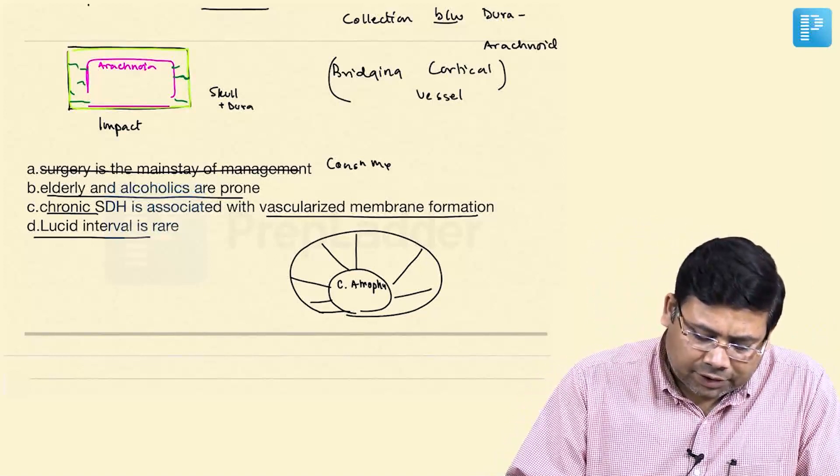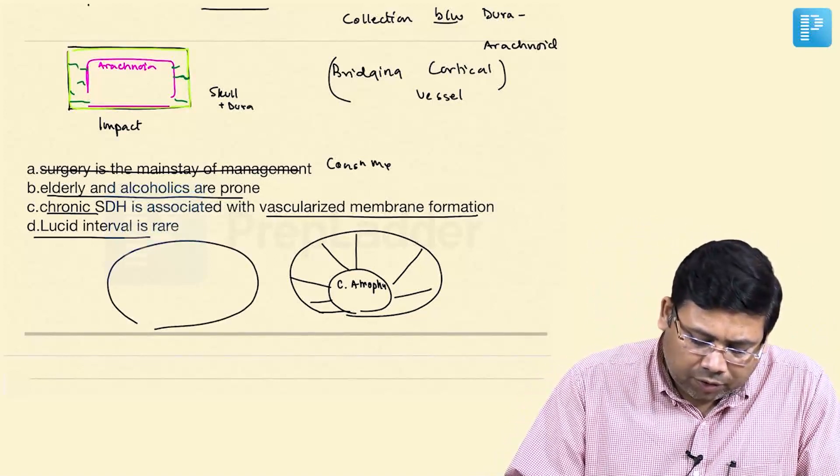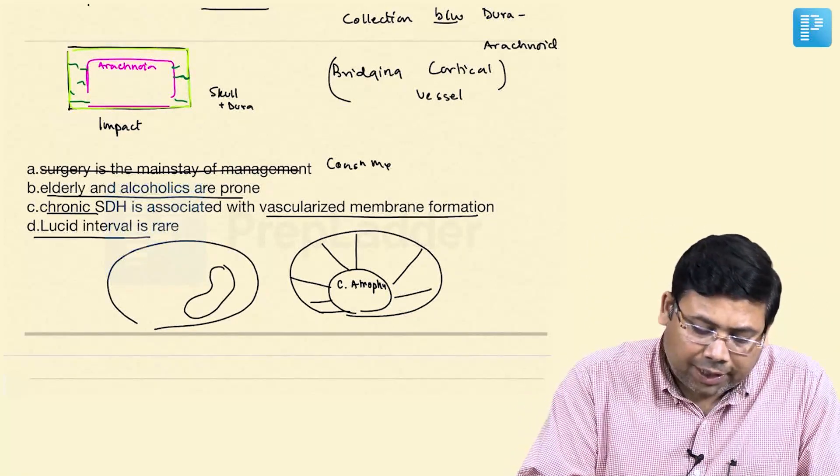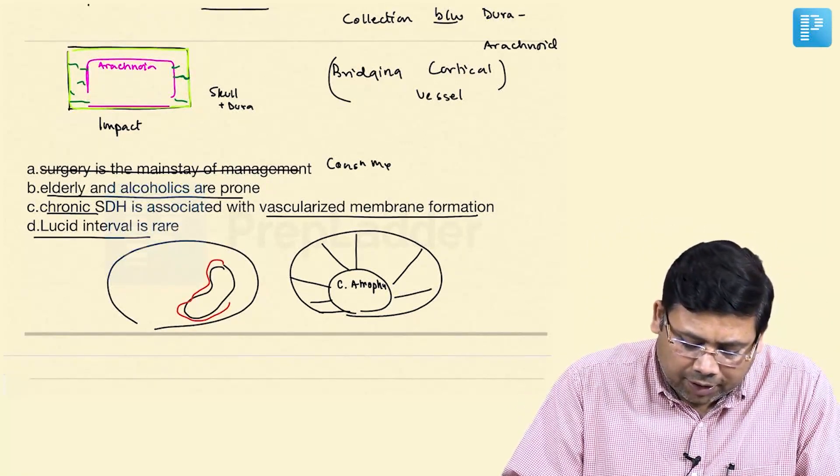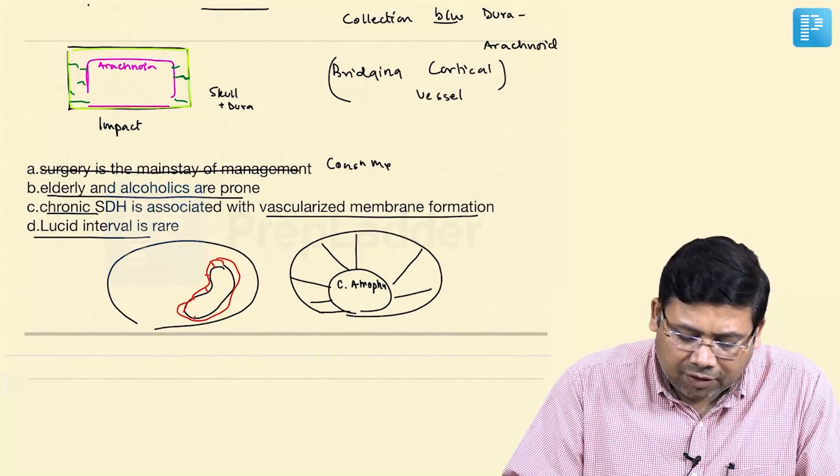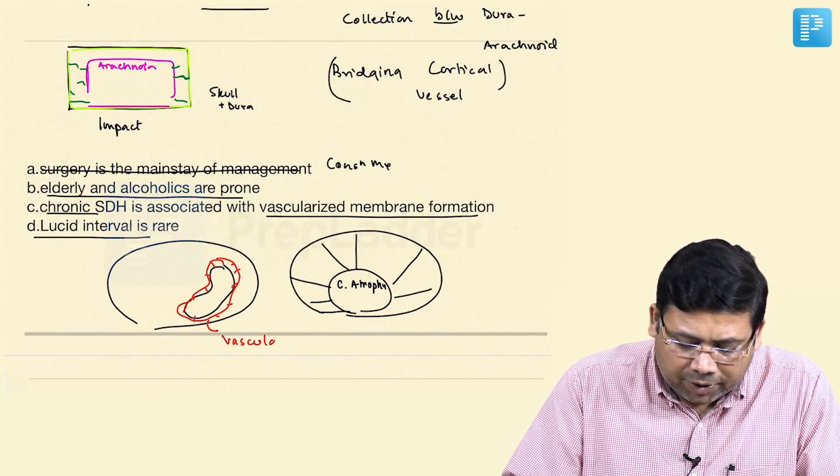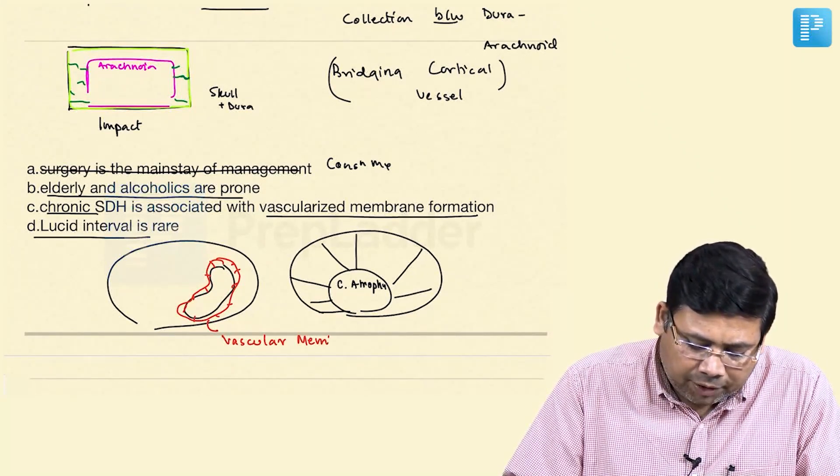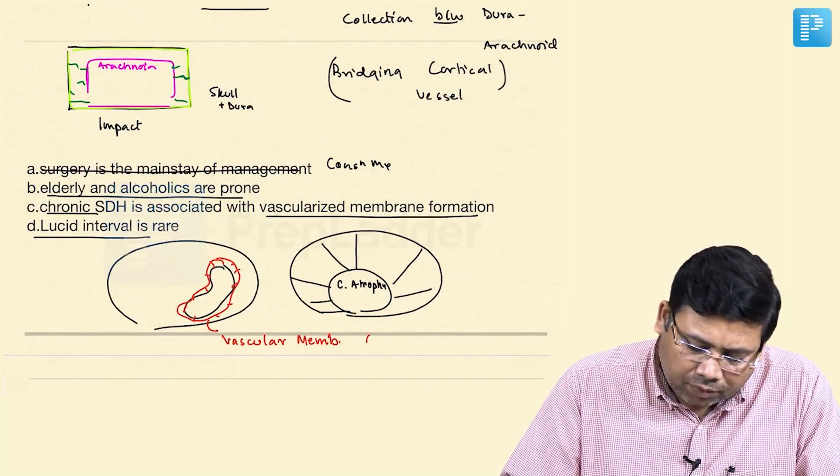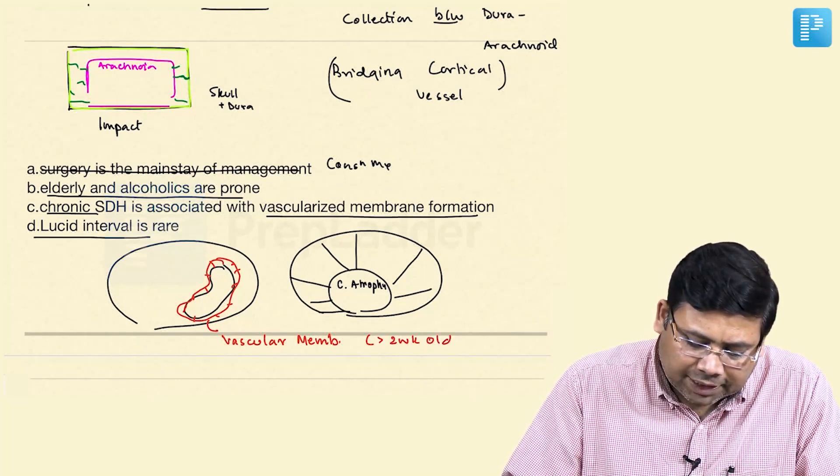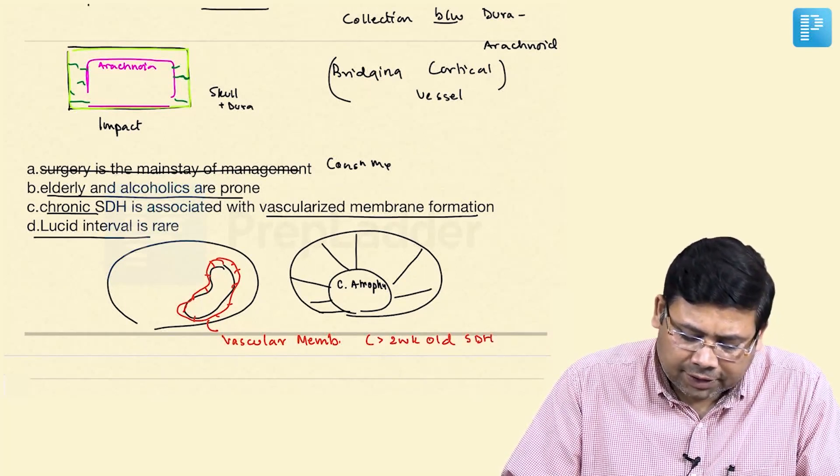When we talk about chronic SDH, do you know what happens? An old SDH gets surrounded by a special membrane and this special membrane is known as a vascular membrane. The vascular membrane is seen in more than two weeks old SDH and this is what is chronic SDH.